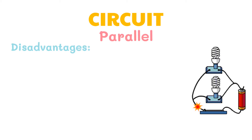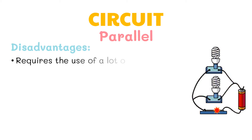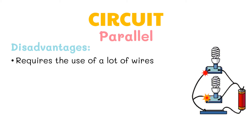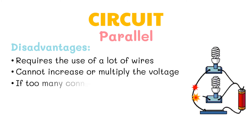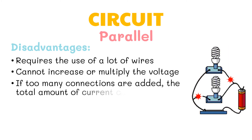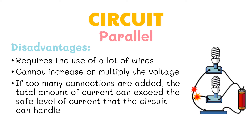The disadvantages of using a parallel circuit are: one, it requires the use of a lot of wires; two, it cannot increase or multiply the voltage; and three, if too many connections are added, the total amount of current can exceed the safe level of current that the circuit can handle.